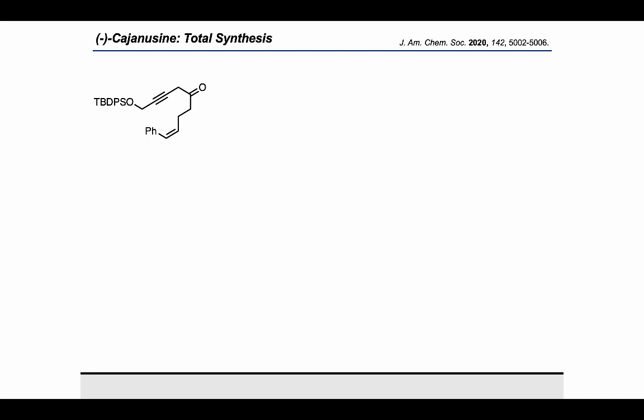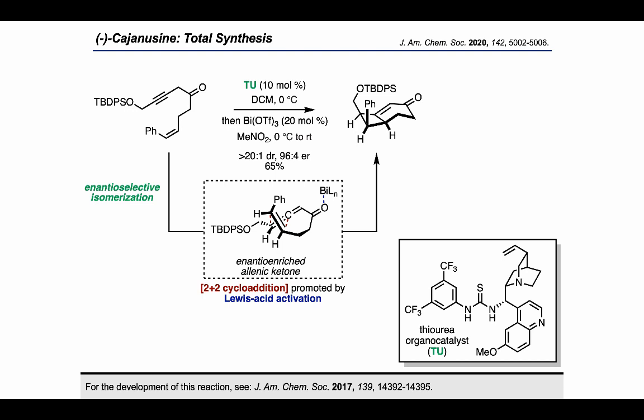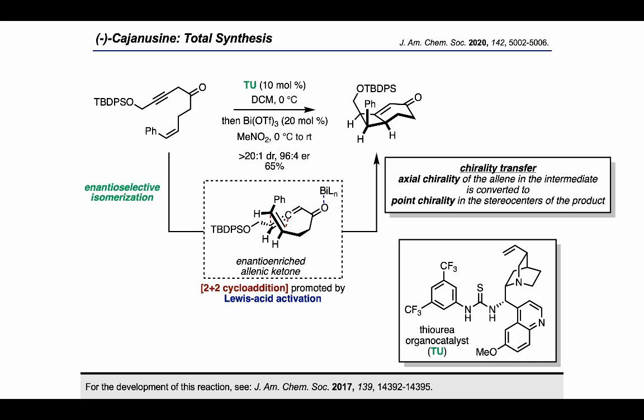They treated the propargylic ketone with a chiral cinchona alkaloid-derived thiourea organocatalyst, followed by bismuth triflate, in order to get the cyclobutane product. This happened by an enantioselective isomerization of the alkyne to the allene, which then underwent a bismuth-promoted 2+2 cycloaddition. This transformation represents a chirality transfer, as the axial chirality of the allene is converted to point chirality in the form of the stereocenters present in the product.